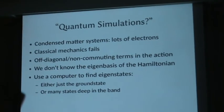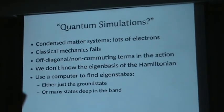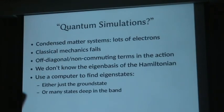When you're trying to solve for whatever the quantum system's doing, you have to take into account these off-diagonal terms in the action. In a quantum Hamiltonian there are all these moves that are non-commuting, and this makes the problem really hard to solve. You're trying to do some huge linear algebra problem, and now you have these terrible off-diagonal terms, and you're stuck — you don't know what the eigenbasis is.